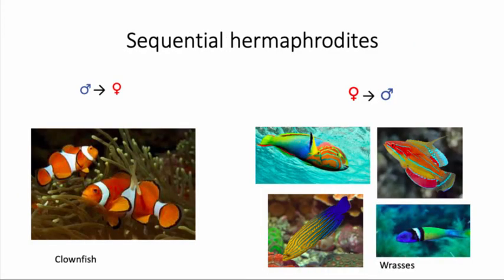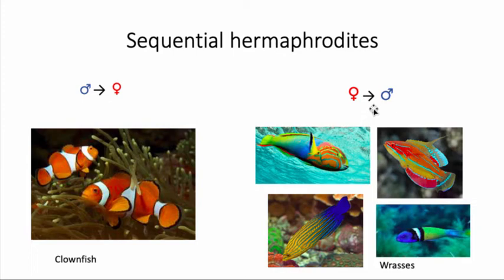We also have sequential hermaphrodites — organisms that switch sex throughout their life. An example is clownfish: they start off as juveniles, then mature as males, and as they get older they eventually transition into females. We have the opposite example too, where after a juvenile period organisms develop into females, and then over time — potentially triggered by social factors such as the male in the group disappearing — the largest, dominant female might turn into a male.